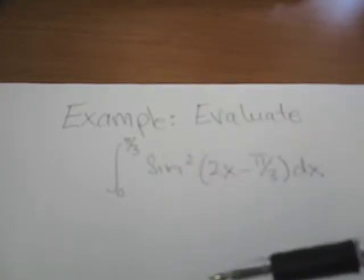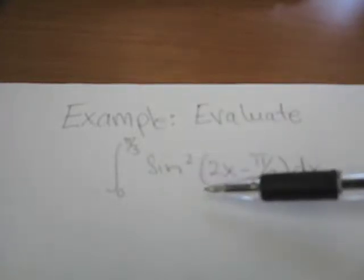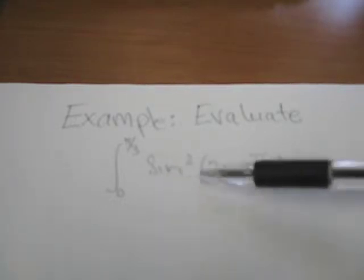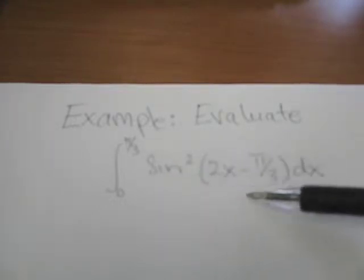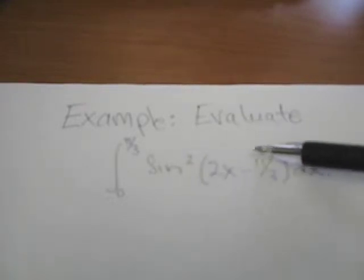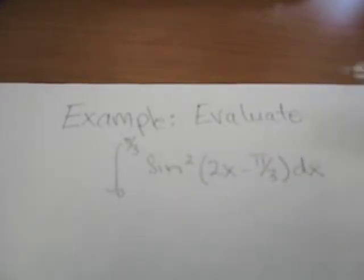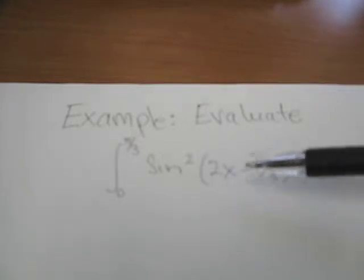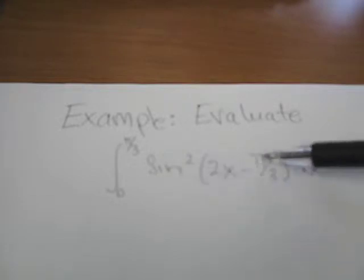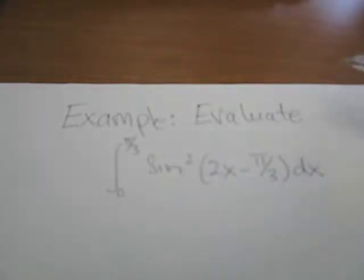One, it is a sine squared function and we do not have an integral for sine squared by itself, so we're going to have to need to change this. Secondly, it's a function of a function because it's the sine squared of 2x minus π/3. So our first objective will be to see if we can change this function to get it into just a sine function and then we'll deal with the sine squared function itself.